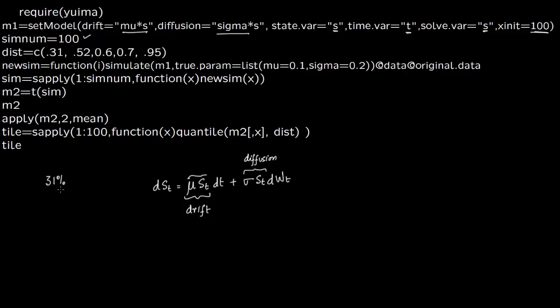You will have the 31st percentile value, 52nd percentile, 60th, 70th, and 95th percentile. You can add as many percentiles you want. We are going to simulate this again and again. I'm writing @data=original.data here because we want to extract the data from this simulation. Then we are s.apply 1 to 100, this is the simulation number, so we are going to do 100 simulations.